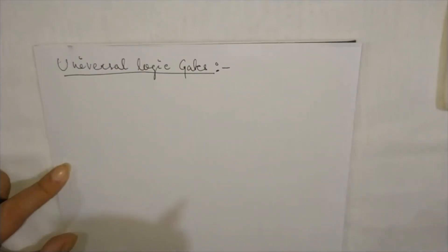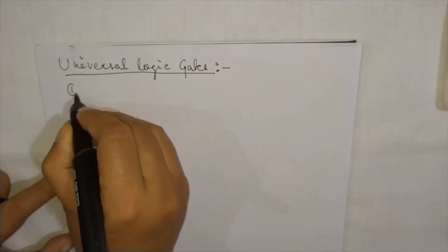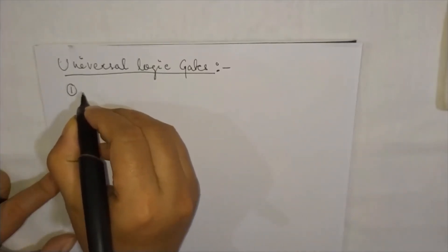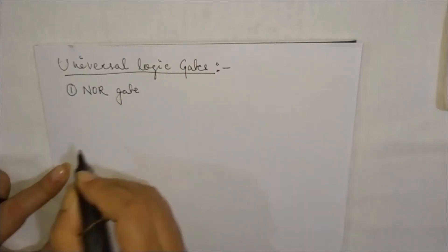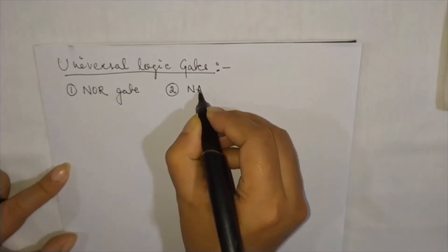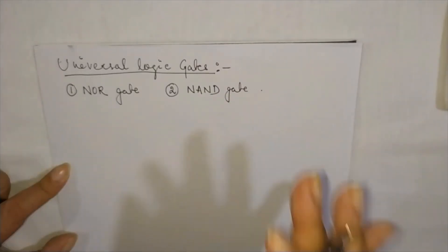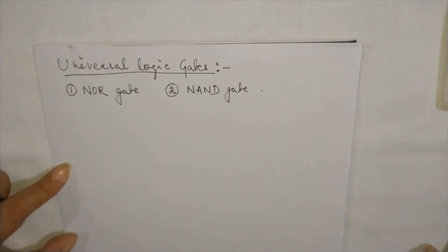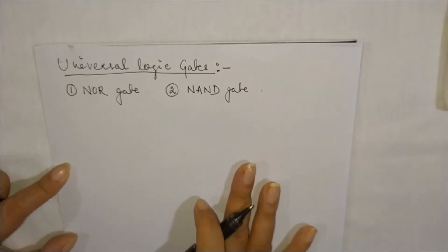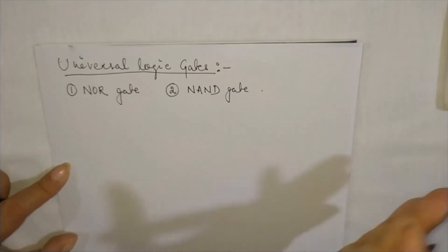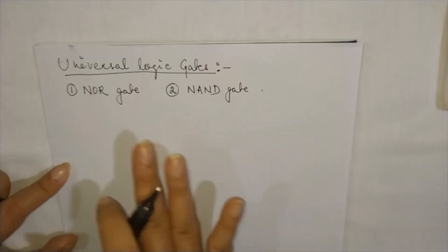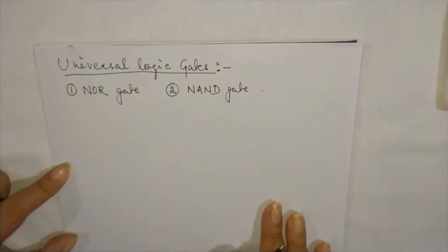Now let us talk about what are universal logic gates and why they are called universal logic gates. Under universal logic gates, there are two categories: the first one is NOR gate and the second one is NAND gate. The importance of these two gates is that you can easily derive the basic logic gates by certain arrangement using only these universal logic gates. That's why these two gates have their importance in electronics.